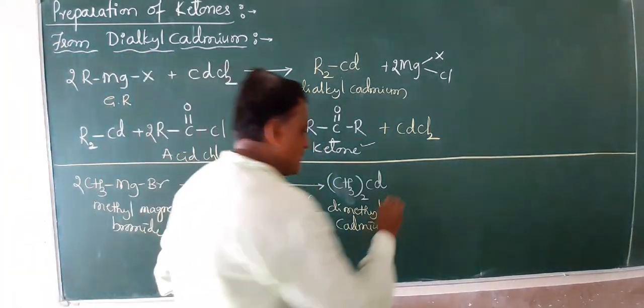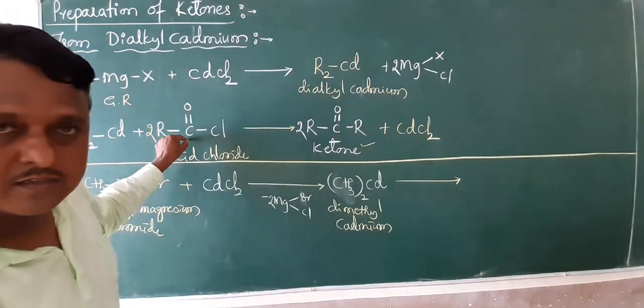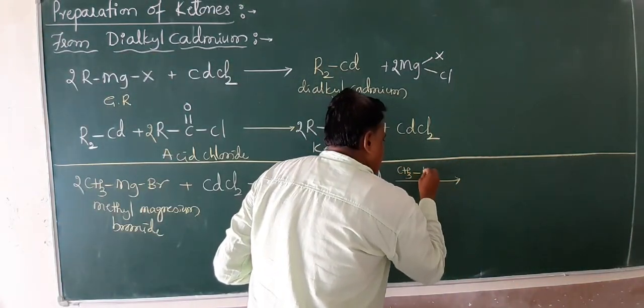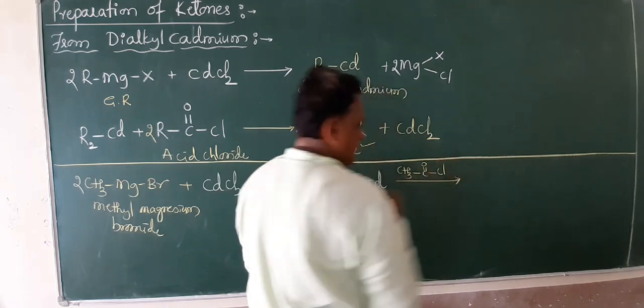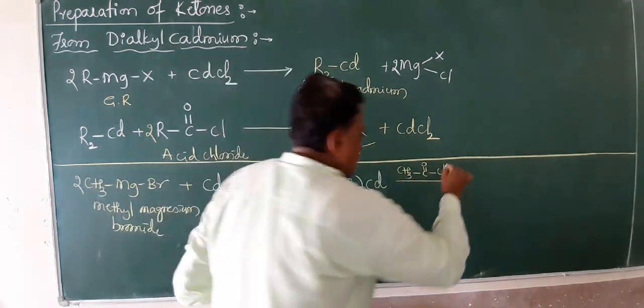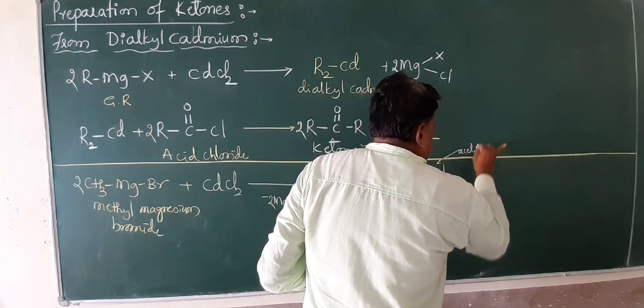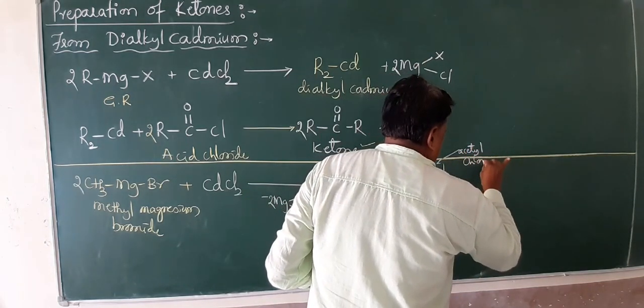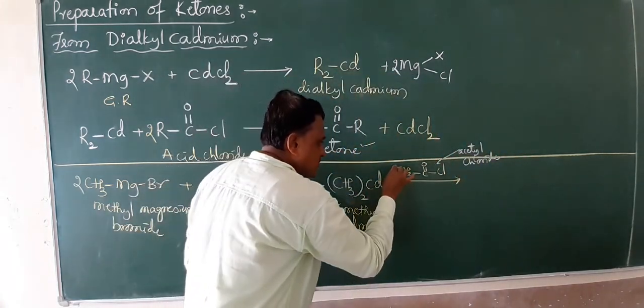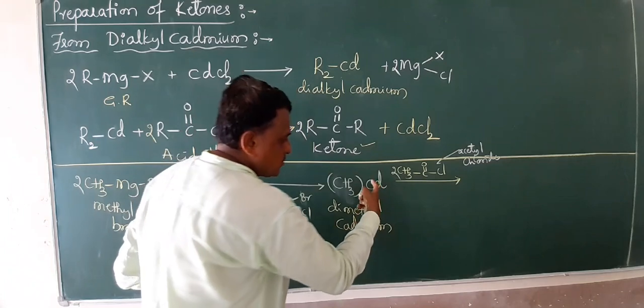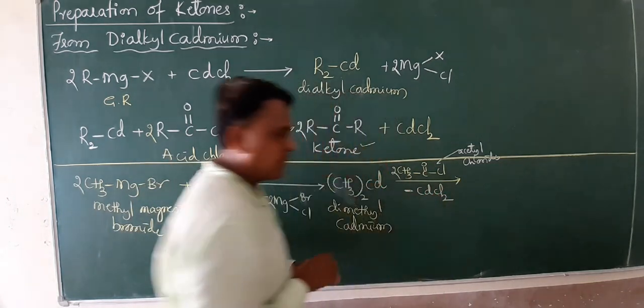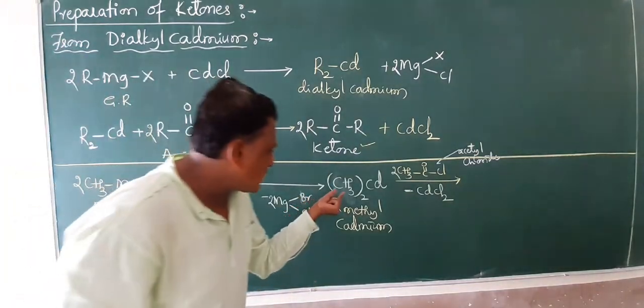Now this dimethyl cadmium is reacting with the second reaction: acid chloride. Now I can use CH3-CO-Cl. Its name? Acetyl chloride. With how many moles? 2 moles. Now the 2 Cl is replaced. Loss of CdCl2. Cadmium chloride is the product.